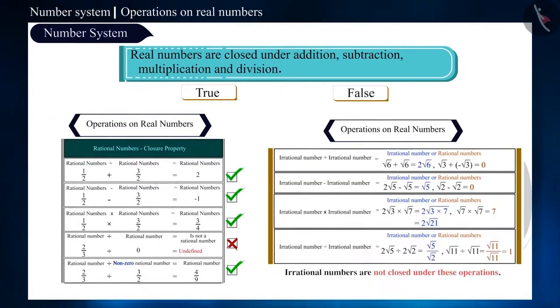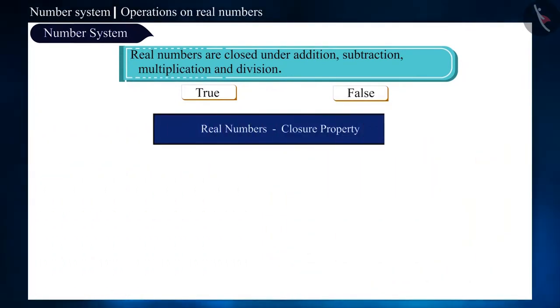We have studied about the closure properties of both rational and irrational numbers. Now let's take some examples and see whether real numbers follow the same or not.